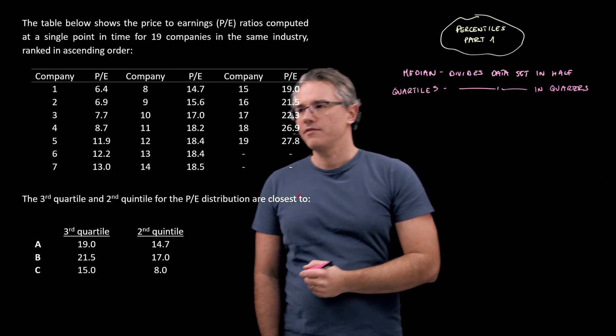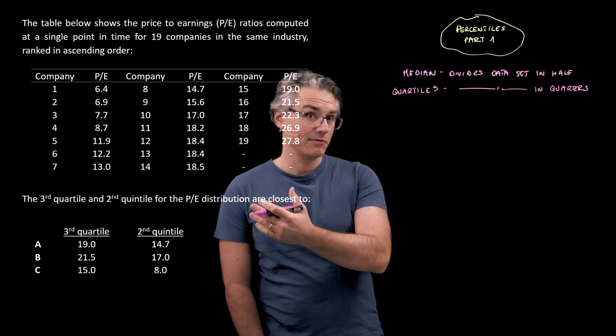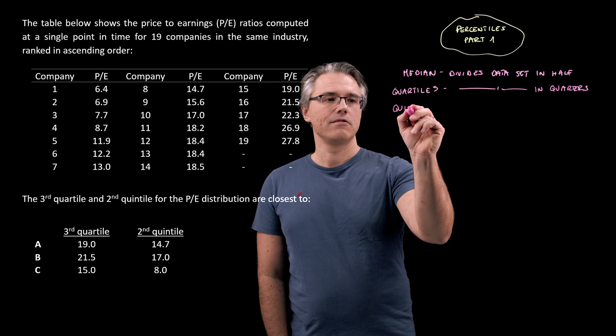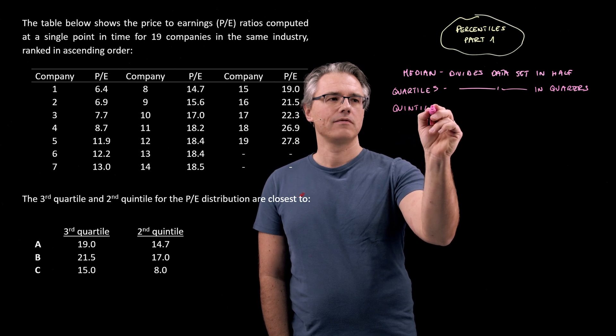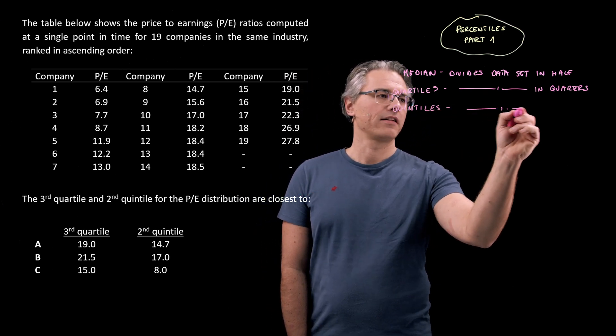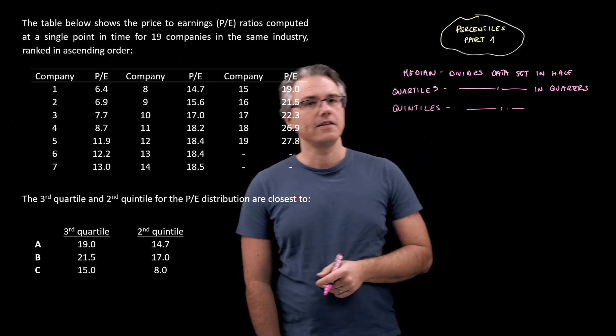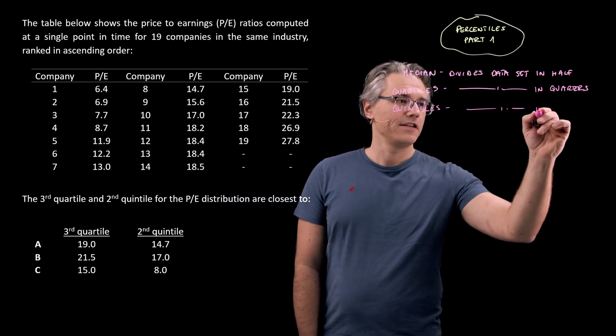We also have something called quintiles, which this question asks about as well. Quintiles have the effect of dividing the population or the data set into fifths.